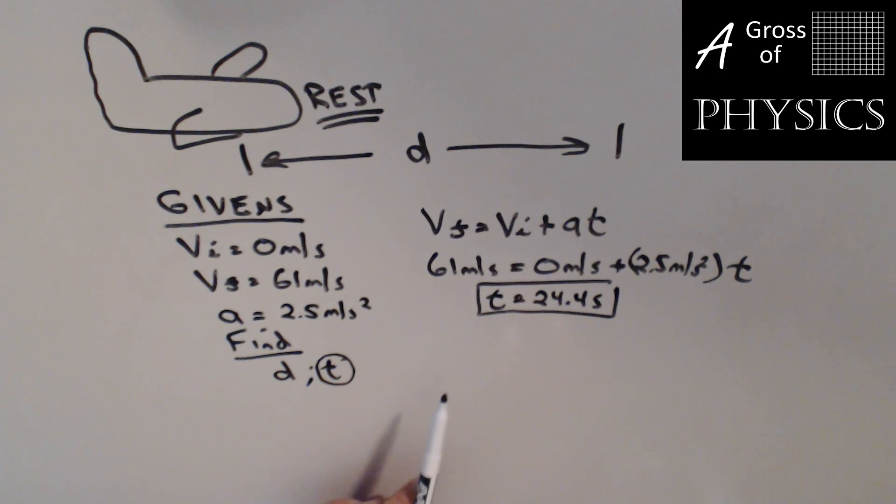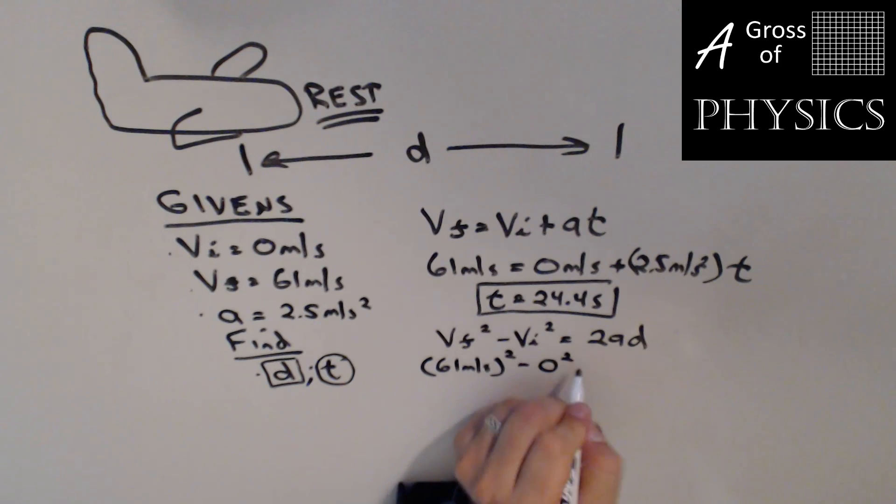Now we can use that value as a given for future problems. However, what I'd like to do for this one is solve for d using a different equation just in case we got the t wrong. If I look at vf, vi, a, and d, and I go through my equation list, I'll find that equation 5 is the one we're going to use. We know vf, vi, a, and we can solve for d. So at this point, we're going to plug the numbers in.